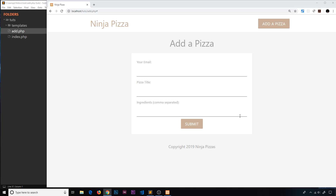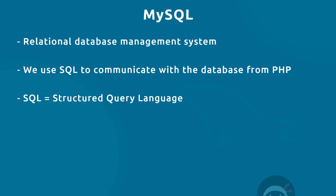MySQL is a relational database management system that runs on a server. By relational, I just mean that our data tables can be related to one another with the use of something called foreign keys — I'm going to talk about that in a minute. To communicate with our database from our PHP files, we use a query language called SQL, which stands for Structured Query Language, to do things like create, delete, or update data.